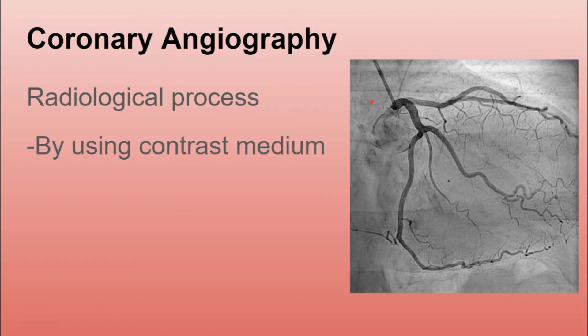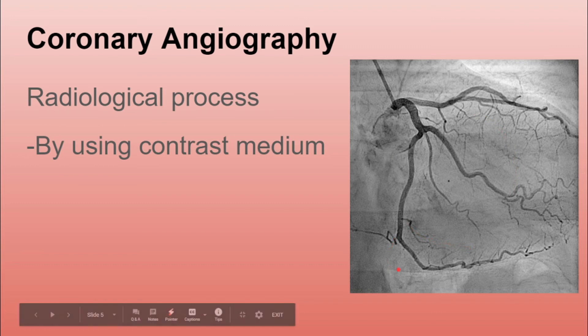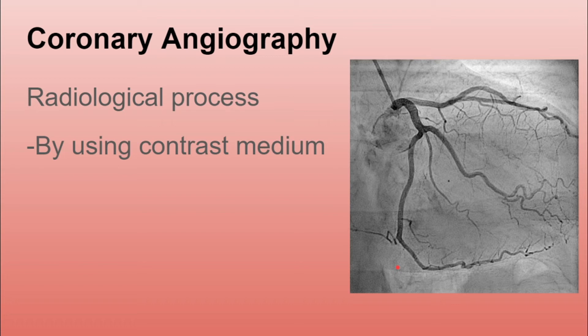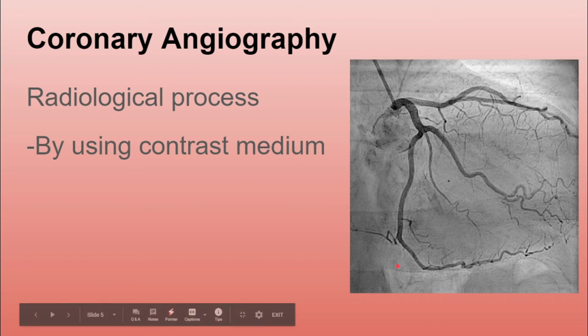Now, coronary angiography — as you can see, this is a photo or X-ray of the coronary angiography. This is a process that uses contrast dye, usually containing iodine, and X-ray pictures to detect blockages in the coronary artery mainly caused by plaque buildup or cholesterol. In short, it is mainly used to detect the position of the blockage in the heart.